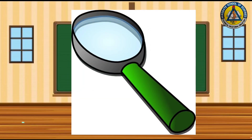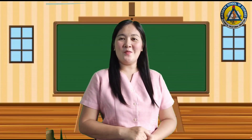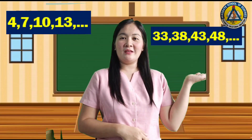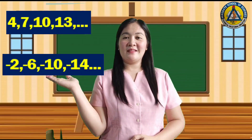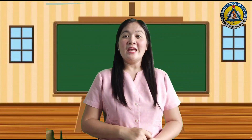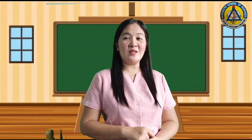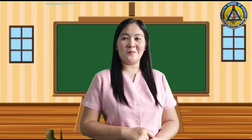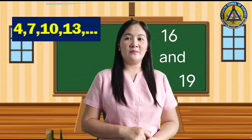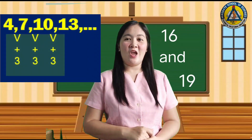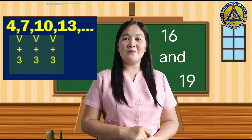Observe the following sequences: 4, 7, 10, 13; then 33, 38, 43, 48; and negative 2, negative 6, negative 10, negative 14. Can you give the next two terms of the above sequences? How did you get those terms? If you got 16 and 19 in item one, then you are correct.